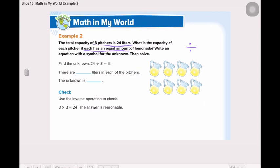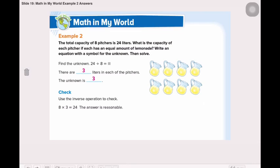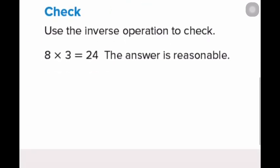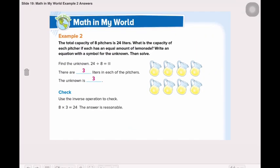We learned this before. 24 divided by 8 is equal to 3. So, there are 3 liters in each of the pitchers — the unknown is 3. Remember, when we're using division, we always check our answer by using the inverse operation. 8 multiplied by 3 is 24, so the answer is reasonable.